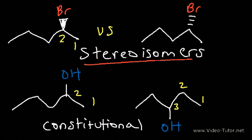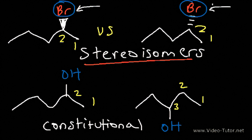Notice that in both stereoisomer cases, the bromine atom is attached to the same carbon — carbon number 2. However, the arrangement in space is different. Even though both bromine atoms are attached to the same carbon, the first bromine atom is directed out of the page towards the front, while the second one is behind the page towards the back. So even though they're connected the same, their spatial arrangement is different, which makes them stereoisomers.